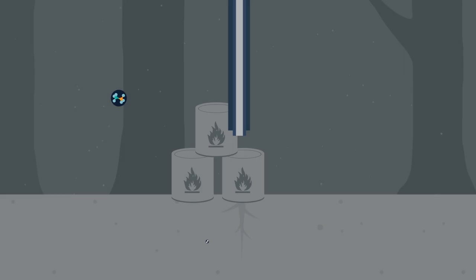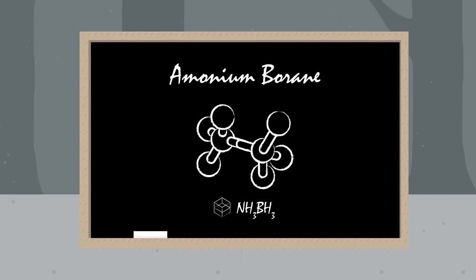For example, ammonia borane, a solid at room temperature with the same structure as ethane, gives up its hydrogen on heating.